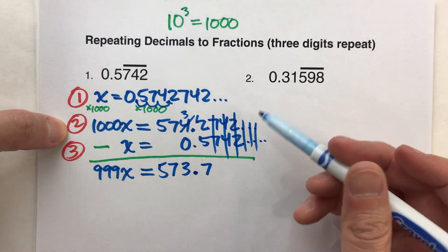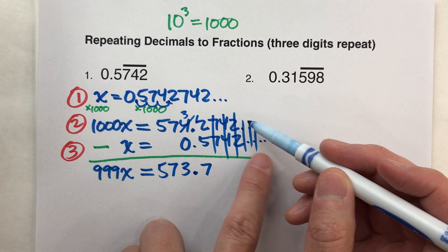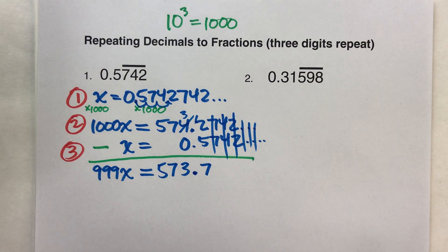So, because we strategically multiplied both sides by 1000, it automatically lined up all the repeated digits to subtract away, and I'm left with 573.7.